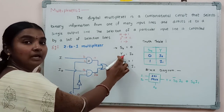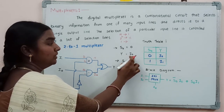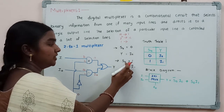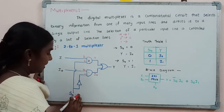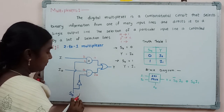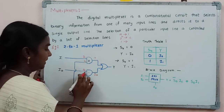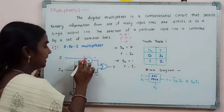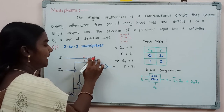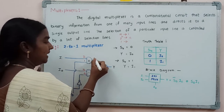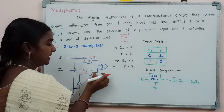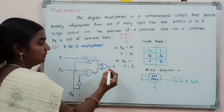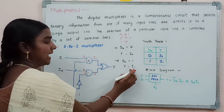Now when s0 equals 1, the NOT gate output to the first AND gate becomes 0, and the direct input to the second AND gate becomes 1. So the first AND gate output is 0, and the second AND gate output is i1. The OR gate output is therefore y equals i1.